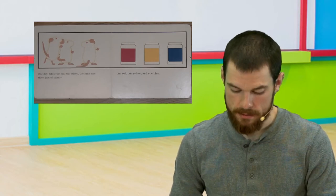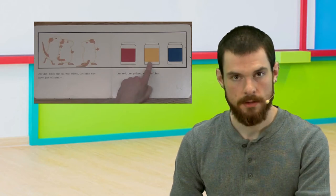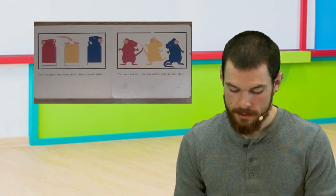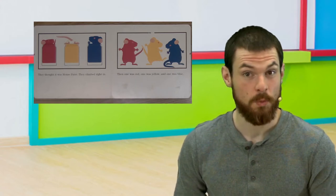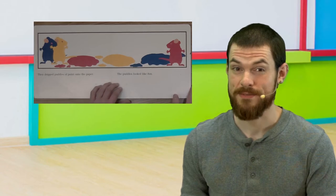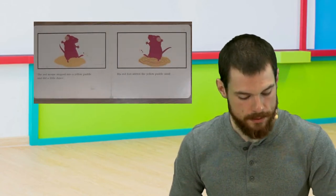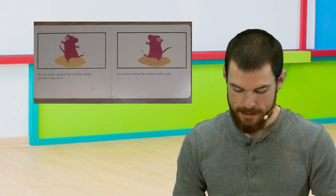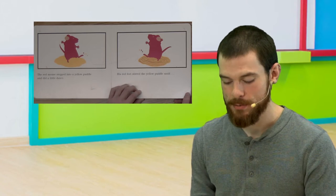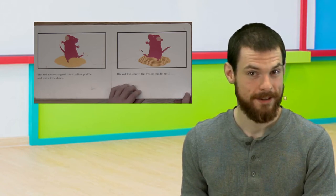Once there were three white mice on a white piece of paper. The cat couldn't find them. One day, while the cat was asleep, the mice saw three jars of paint. One red, one yellow, and one blue. They thought it was mouse paint. They climbed right in. Then one was red, one was yellow, and one was blue. They dripped puddles of paint onto the paper, and the puddles looked like fun. The red mouse stepped into a yellow puddle and did a little dance. His red feet stirred the yellow puddle until, do you know what's going to happen next? Do you know what happens when you combine red and yellow? Let's find out.